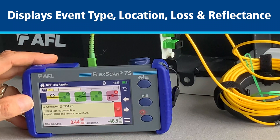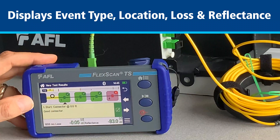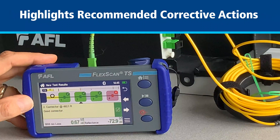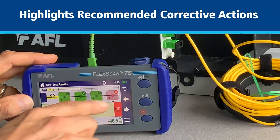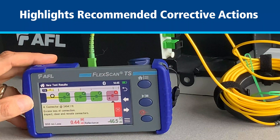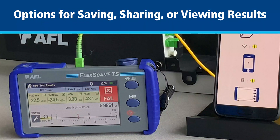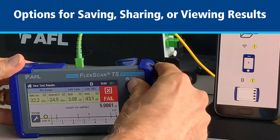Touching any event icon selects it and displays its event type, location, loss and reflectance. Recommended corrective action is also displayed for failing events. Pressing the home menu button toggles between the test results screen and the home screen menu.